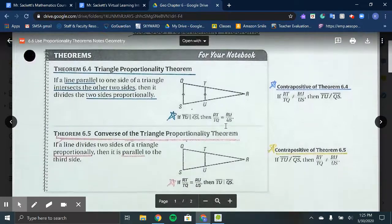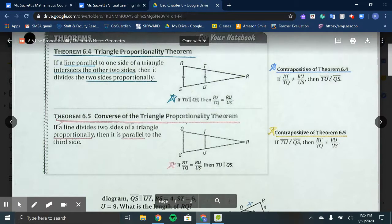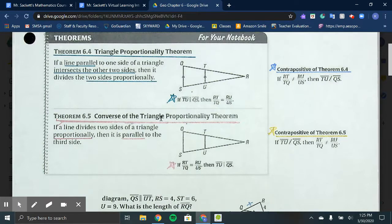The other main theorem to start is 6.5, the Converse of Triangle Proportionality Theorem, which states if a line divides two sides of a triangle proportionally, then it is parallel to the third side. So in this example, RT over TQ is proportional to RU over US, then line TU is parallel to side QS.